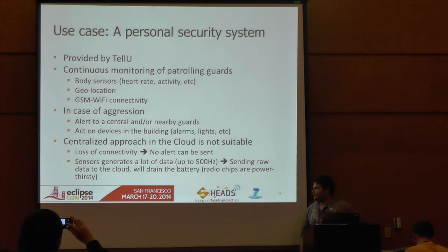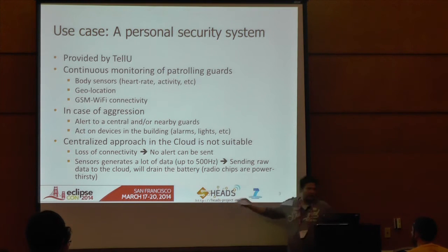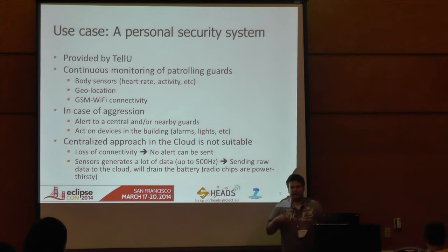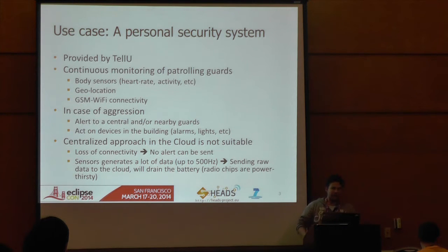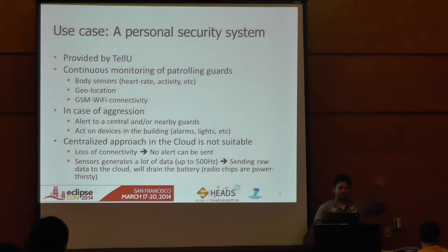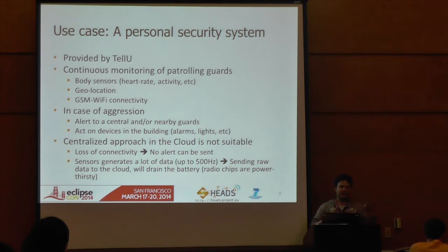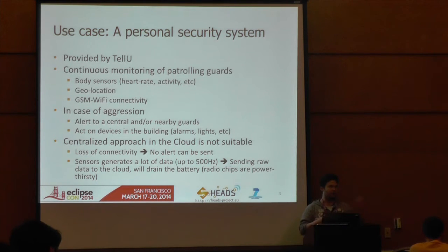A typical use case we are using in the HEADS project is a personal security system. The idea is that we equip a guard with some body sensors and location sensors to track where the guard is patrolling in a building. In case of an aggression, we send an alert to a central police station, or send alarms to guards patrolling nearby. We also want to act on building devices — turning on lights or a physical alarm so that the attacker will run away.